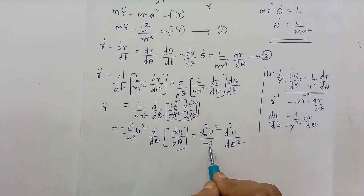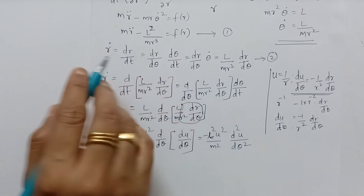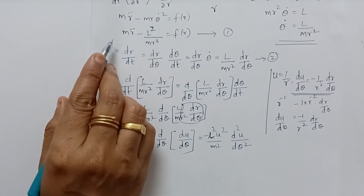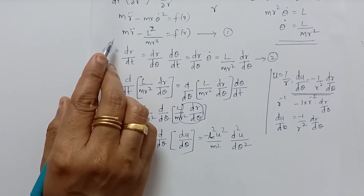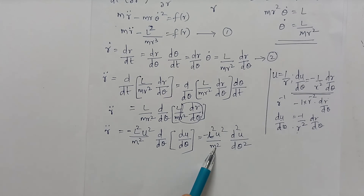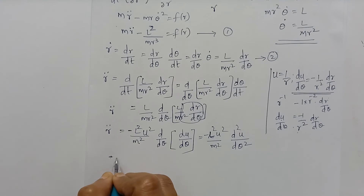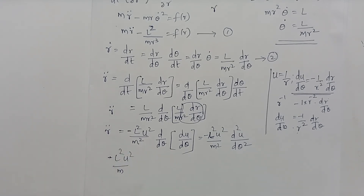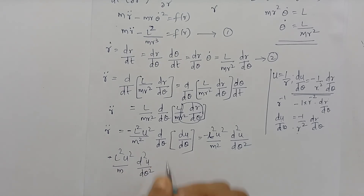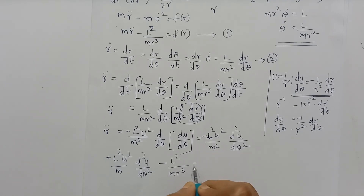Differentiating again, R̈ = −(L²u²/M²)·(d²u/dθ²). Now substituting into equation 1, MR̈ − L²/MR³ = F(R): the M in MR̈ cancels one M from the M² giving −(L²u²/M)·(d²u/dθ²). Also, 1/R³ = u³, so −L²/MR³ becomes −L²u³/M. And F(R) = F(1/u).